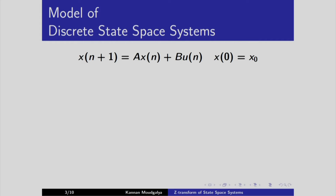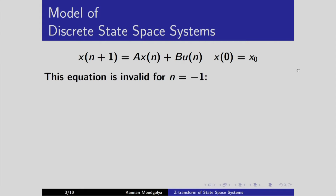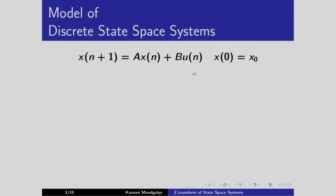Let us start with the standard model of a discrete state space system. We have x(n+1) = A·x(n) + B·u(n), with initial condition x(0) = x₀. Notice that this equation is invalid for n = -1. It is true for all positive n, but what happens when n equals -1?